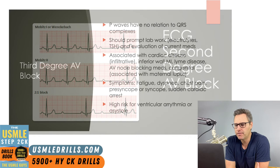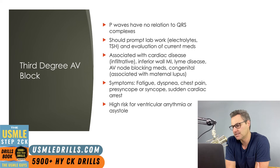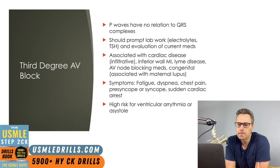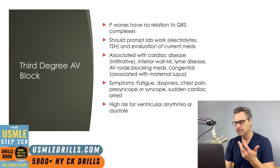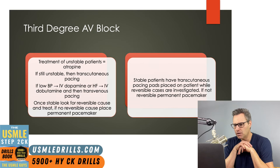Finally, third degree heart block. Always check for electrolyte abnormalities and TSH levels. Same disease associations as the other types, with the addition of maternal lupus as a potential congenital cause. The main feature is complete failure of impulse conduction between the atria and ventricles, meaning P waves have no relation to QRS complexes. Unlike second degree patients who may be asymptomatic, third degree AV block patients are almost always symptomatic and at very high risk for ventricular arrhythmias or asystole.